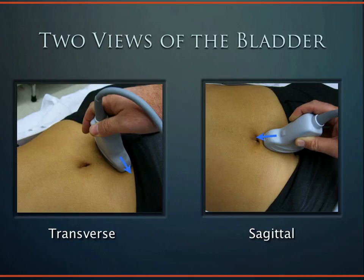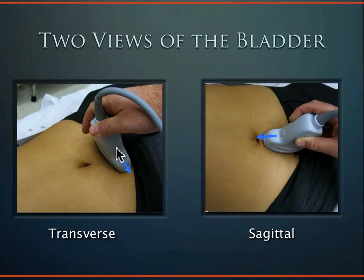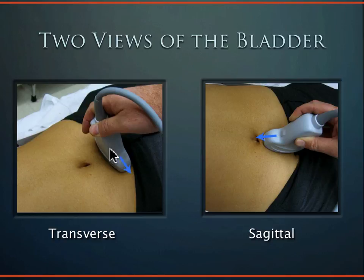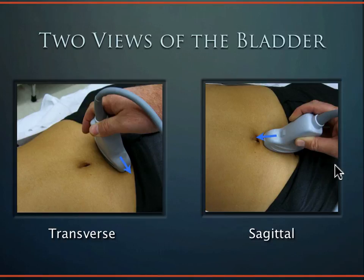There are two views of the bladder: transverse with indicator to the patient's right, and sagittal with indicator to the patient's head. The probe sits just below the umbilicus, but since the bladder is actually down by the pubic symphysis, you tilt the probe inferiorly — sending sound down toward where the bladder really is. In the sagittal view you similarly rotate the cable to shine sound inferiorly. The probe can be held quite flat to visualize the bladder.